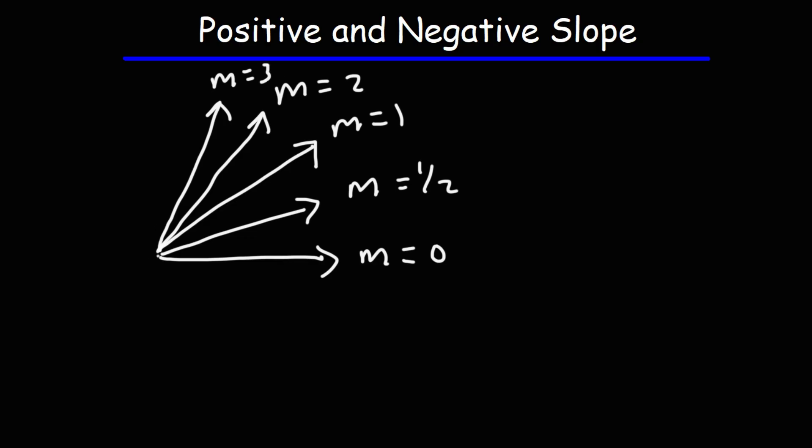At an angle of 90 degrees, we have a vertical line. The slope of a vertical line is undefined. We can't put a value to it.